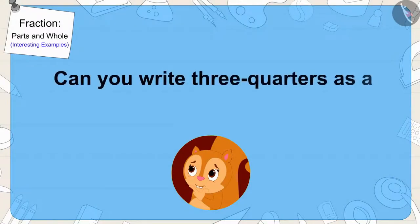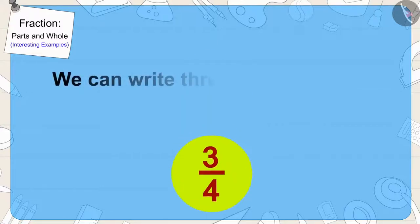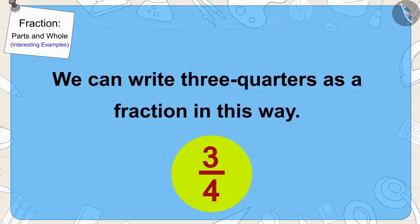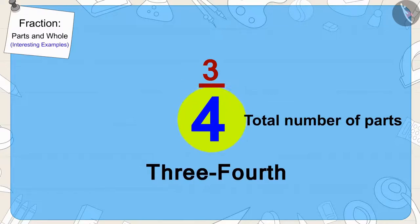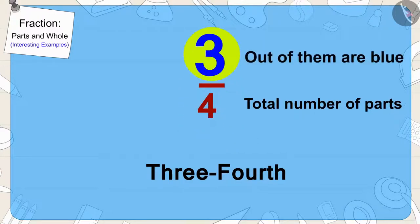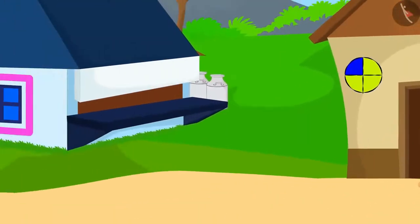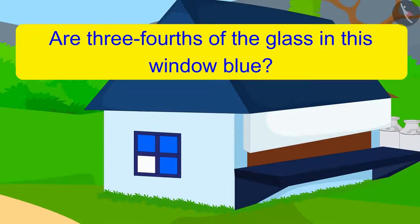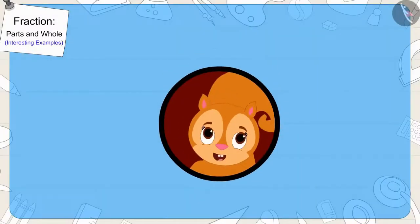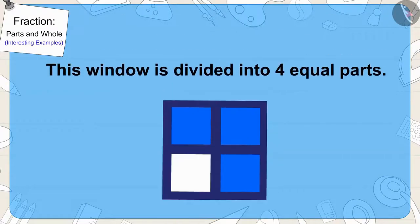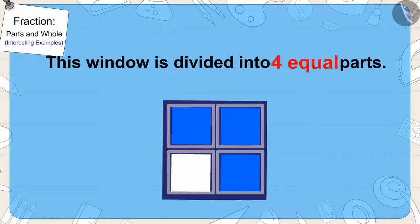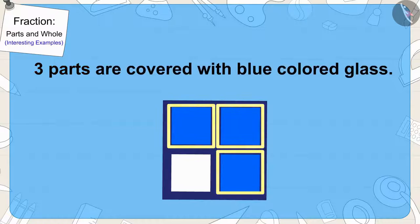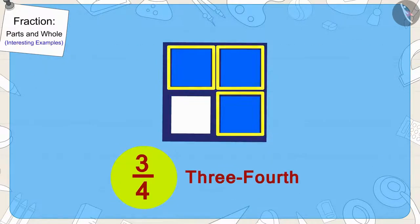Children, can you write three-quarters as a fraction? Yes, we can write three-quarters as a fraction in this way. The number four shows that our whole is divided into four equal parts, and three parts out of them are blue. Now Chanda started looking for that window and finally saw one. Are three-fourths of the glass in this window blue? Yes — this window is divided into four equal parts, out of which three parts are covered with blue-coloured glass. So three-fourths of the window has blue glass.